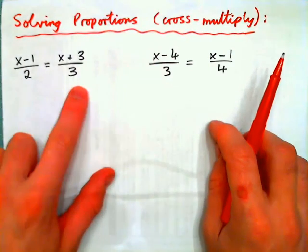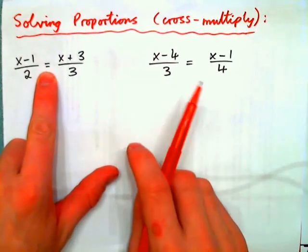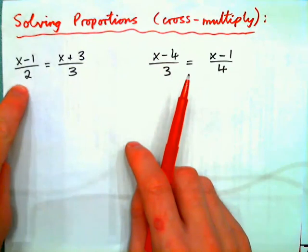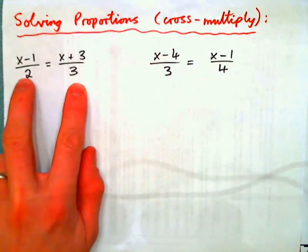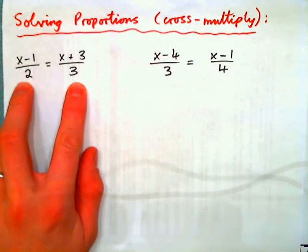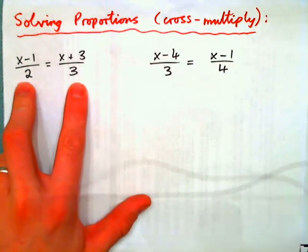If we have this equation, an equation has an equal sign in it. This is a fraction, this is a fraction. If you have a fraction equal to a fraction, that means you have a proportion. When you have a proportion, you can cross multiply.